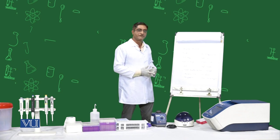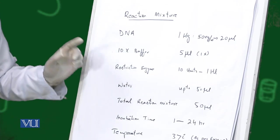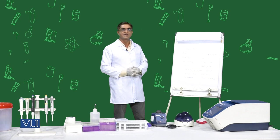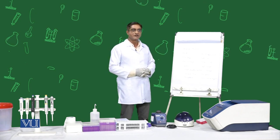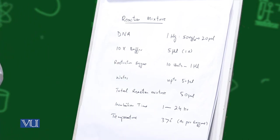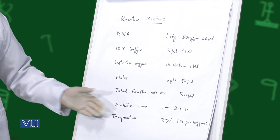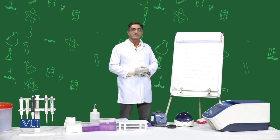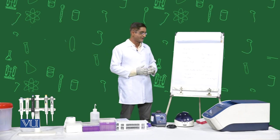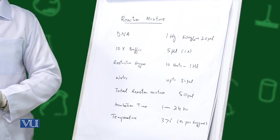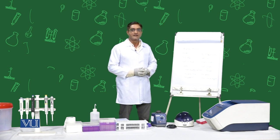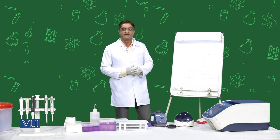After preparing the mixture, we will put it for incubation. The incubation time and temperature differ for different enzymes, normally varying from 1 hour to 24 hours. We are using EcoR1, so we will incubate for 1 hour. There are specific temperatures for specific enzymes at which they react most fast and accurately. Normally we put it at 37 degrees centigrade. If the temperature is different, it will be mentioned on the restriction enzyme.